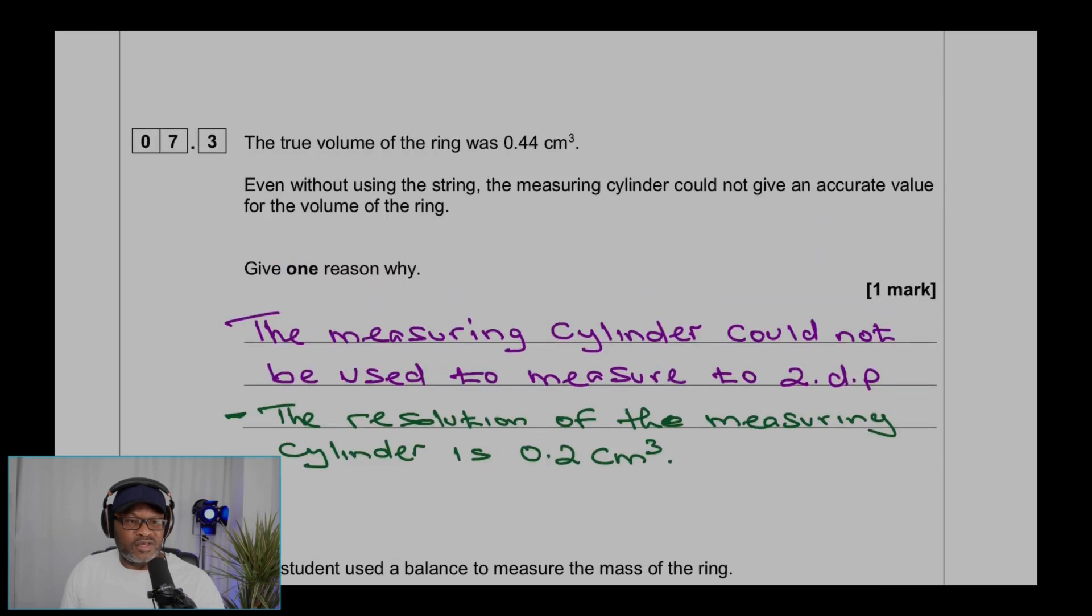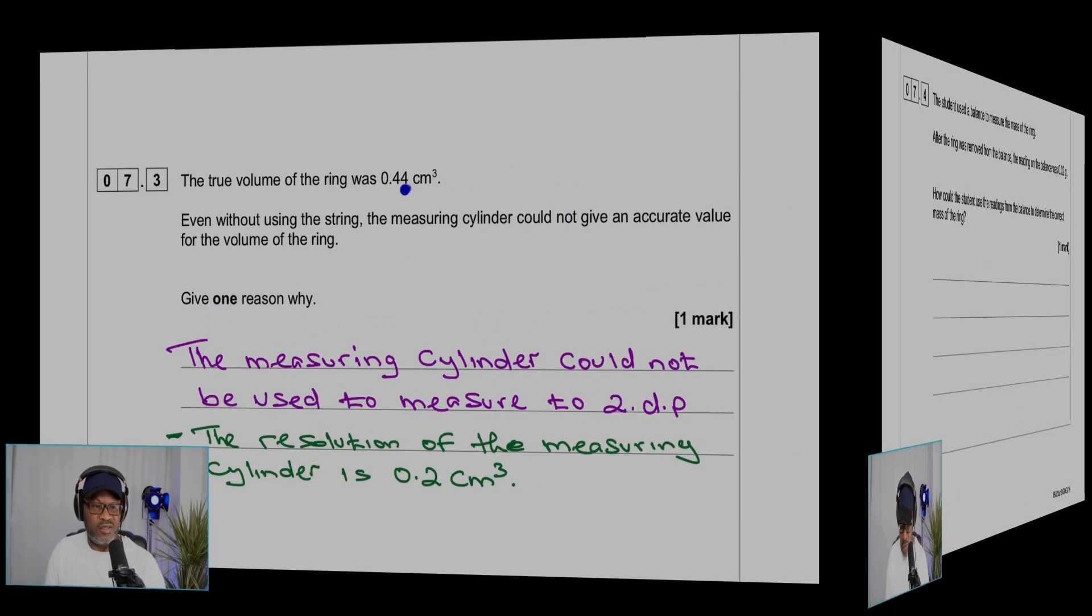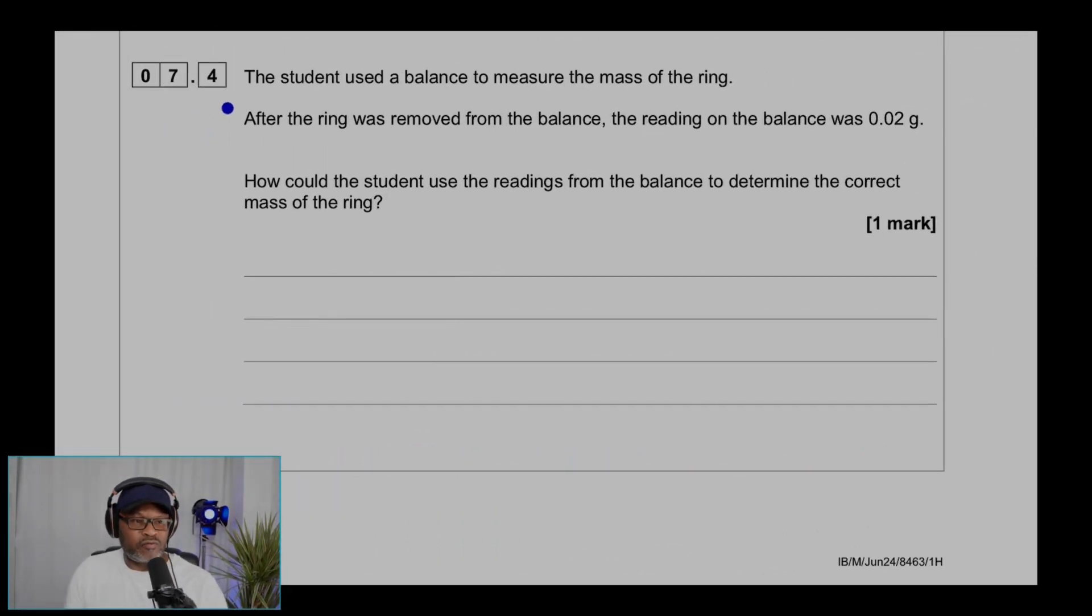Question 7.4: The student used a balance to measure the mass of the ring. After the ring was removed from the balance, the reading on the balance was 0.02 grams. How could a student use the readings from the balance to determine the correct mass of the ring? Subtract 0.02 grams from the measured value.